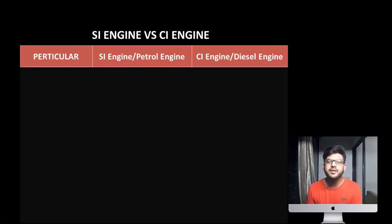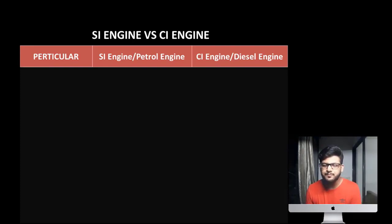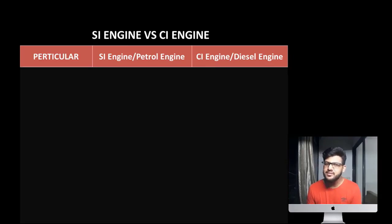For listing the differences, we will use three columns: the particular — which is the term we are talking about — then SI engine, and then CI engine. So in case you are writing in an exam, you also need to write in this same manner: first is particular, second is SI engine, and third is CI engine. You can take notes.